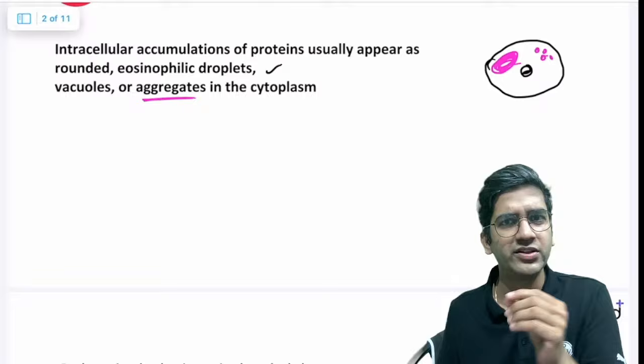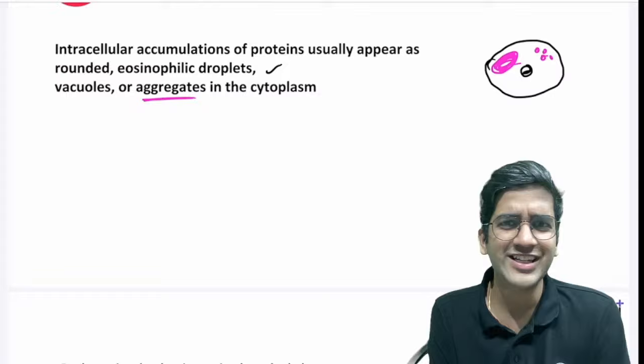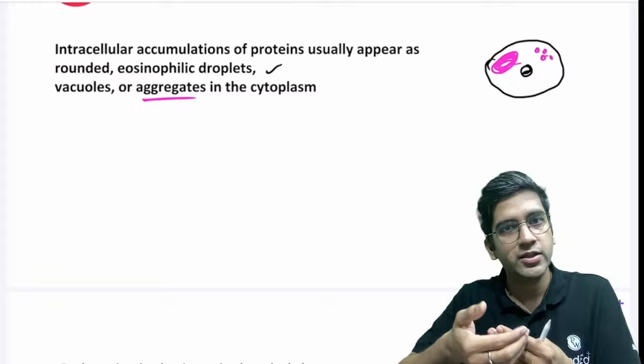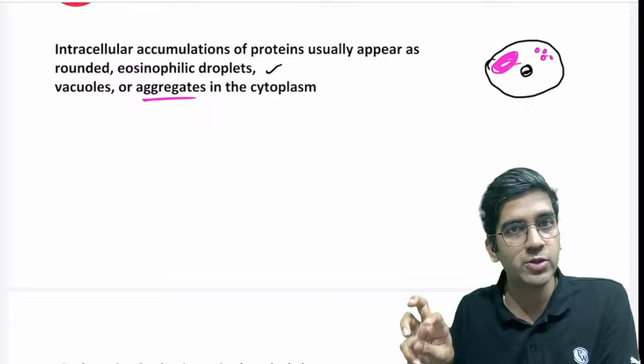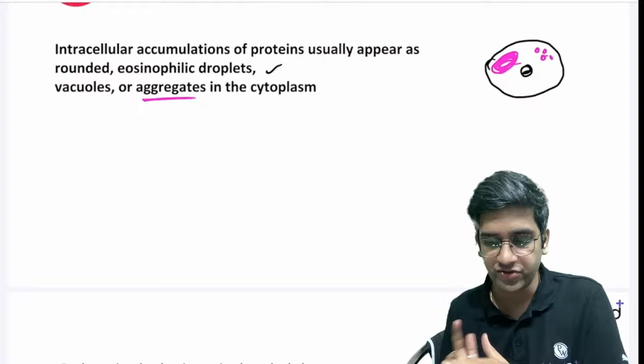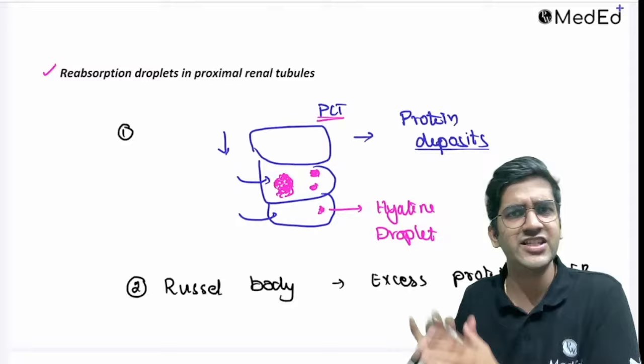Now let's see the different places where protein accumulation can occur. What is the function of the proximal convoluted tubule of the kidney? It's reabsorption. So normally, protein is filtered by the glomerulus and the PCT reabsorbs the protein. If there is a disease causing excess secretion of protein from the glomerulus, there is definitely a possibility that protein can get accumulated in the PCT. Normally PCT will reabsorb, but it's not enough to cause accumulation — it just stays there.